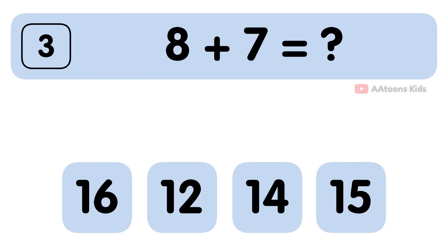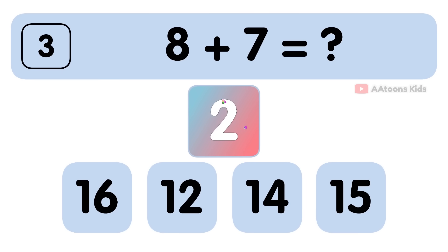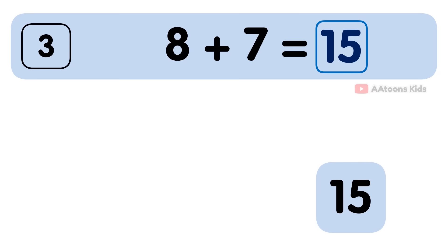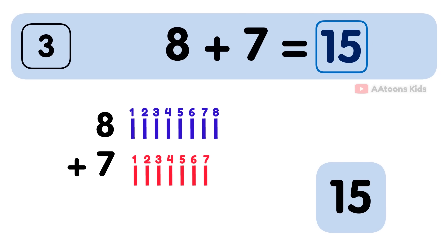8 plus 7 is equal to 15. Let's add the numbers 8 and 7. Now count together: 1, 2, 3, 4, 5, 6, 7, 8, 9, 10, 11, 12, 13, 14, 15. So the answer to 8 plus 7 is 15.